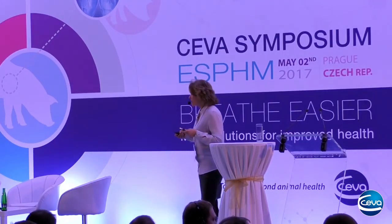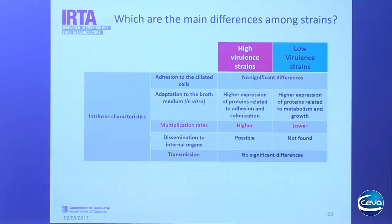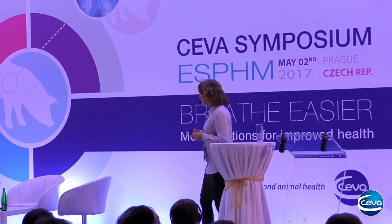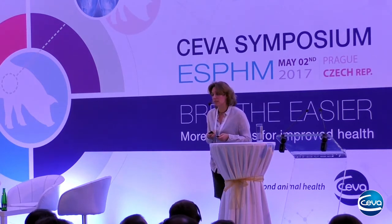On the contrary, high virulence strains showed higher expression of proteins related to adhesion and colonization, whereas low virulence strains showed higher expression of proteins related to metabolism and growth — the low virulence strains appear much better adapted to in vitro growth. This explains the higher multiplication rates of high virulence strains compared to the low virulence ones. Finally, although Mycoplasma was considered a strict respiratory pathogen, in recent papers Mycoplasma DNA was detected and isolated from other organs such as spleen and liver, without any lesions, in strains considered highly pathogenic.